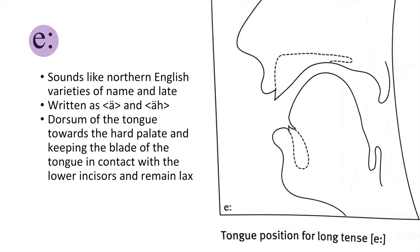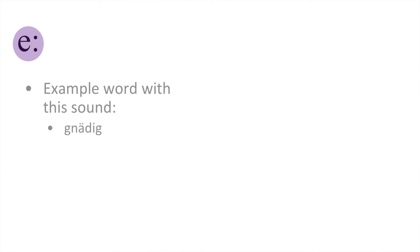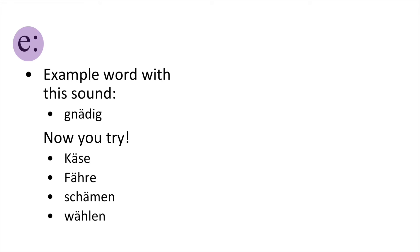Our last sound is ä (eh). To truly pronounce this sound correctly, it would be close to that of the Bavarian pronunciation. However, many of us tend to say it more like speakers in northern Germany would. This sound is like that found in the words 'name' and 'late'. One can pronounce this sound by raising the dorsum of the tongue towards the hard palate and keeping the blade of the tongue in contact with the lower incisors while remaining lax. Here is an example word: Nedig. Now try saying these: Käse, käse, Fähre, fähre, Schemen, schemen, Wählen, wählen.